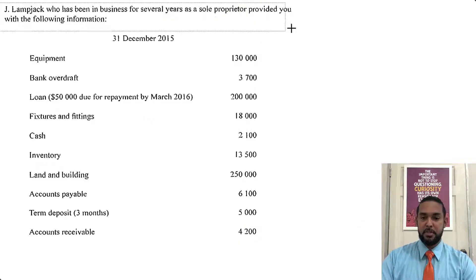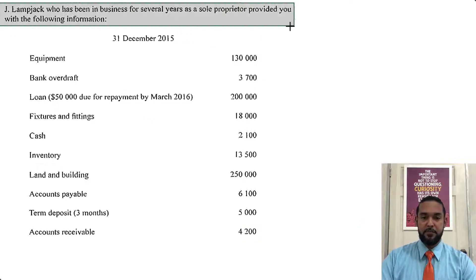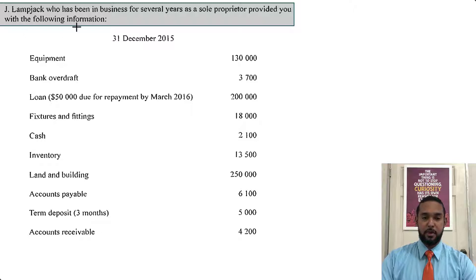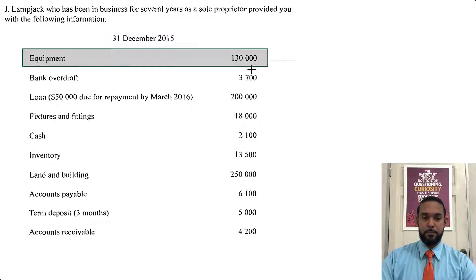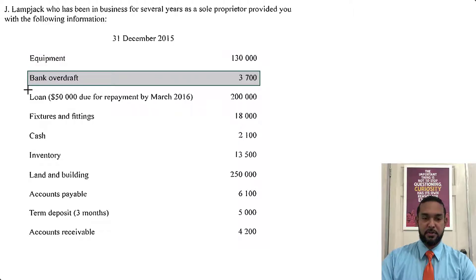So as per usual, we're going to take a read of the information. So Jay Lambjack, who has been in business for several years as a sole proprietor, provided you with the following information. This is the 31st December 2015. We have equipment. We have a bank overdraft of 3,700.